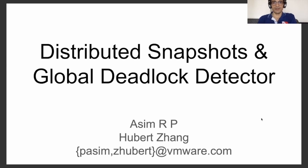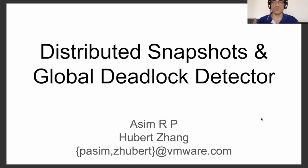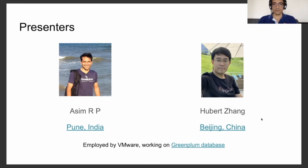Hello everyone. My name is Asim and my friend Hubert. We are going to present this talk about distributed snapshots and global deadlock detector today. We both work at VMware and our job is to hack on Greenplum database, which is a fork of PostgreSQL.